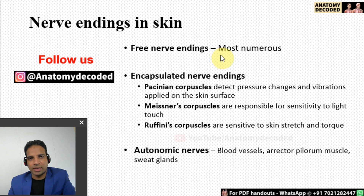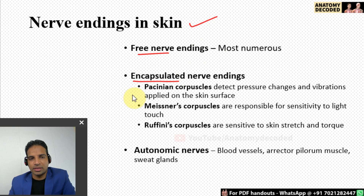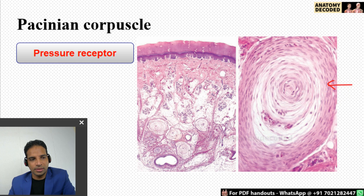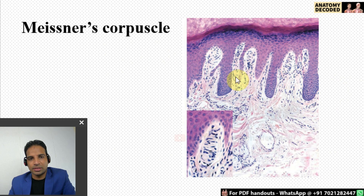Additional points regarding nerve endings of the skin: there are free nerve endings, which are the most numerous, and encapsulated nerve endings including Pacinian corpuscles, Meissner's corpuscles, and Ruffini corpuscles, as well as autonomic nerves. Pacinian corpuscles are seen in the dermis with a characteristic onion-peel appearance. Meissner's corpuscles are seen in the region of the dermal papilla and are responsible for tactile sensations.